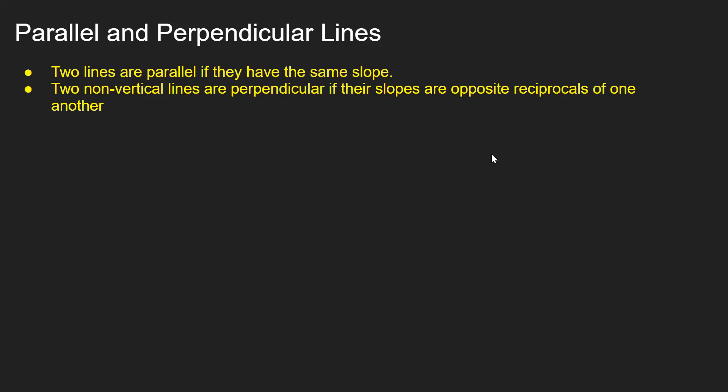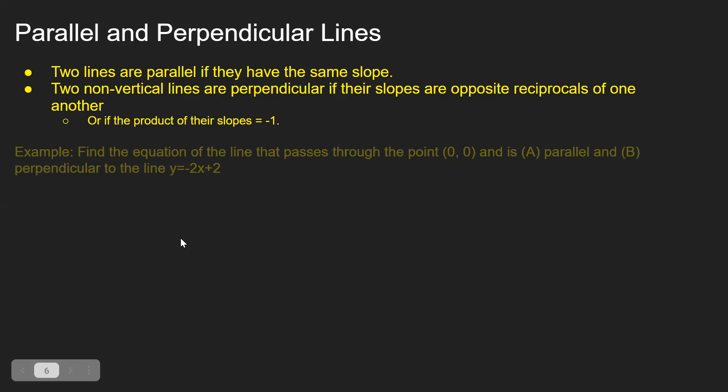Another way to determine if two lines are perpendicular is to multiply their slopes. The product of their slopes will equal negative one.